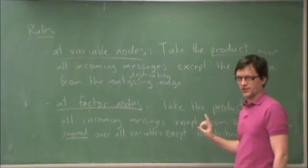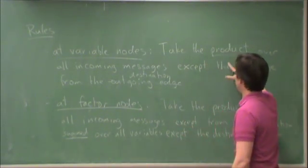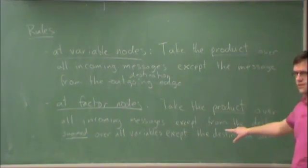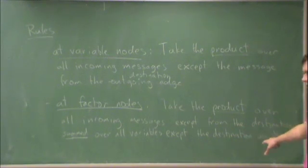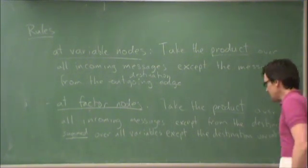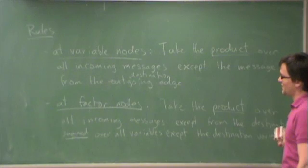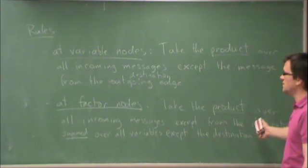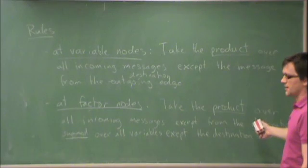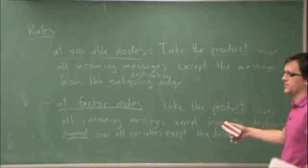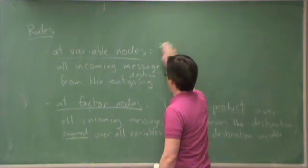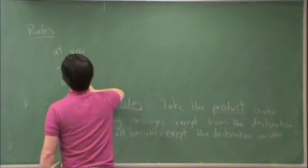This is why it's called the sum product algorithm, because you're always taking products or sums. The only place where you take a sum is at the factor nodes, and that's because factors involve many variables. And the destination, which is always from a factor, is always a variable. The message has to be a function of the destination variable, so you have to eliminate all of the variables except that for the destination.